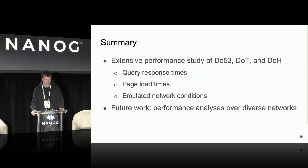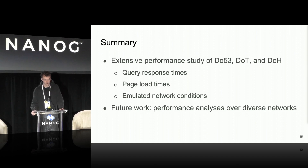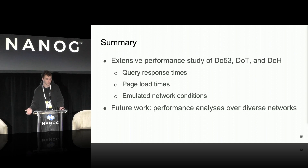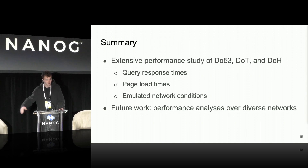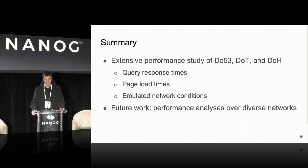To summarize: we did a performance study of DO53, DOT, and DOH comparing query response times, page load times, and emulated network conditions. For future work, we want to perform analysis over a diverse set of networks — residential ISPs across the United States rather than just Amazon EC2 instances — and do measurements in networks further away from CDNs. We're working with a university in South Africa and colleagues there to run measurements across Africa.